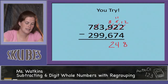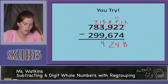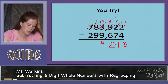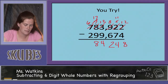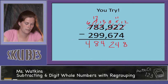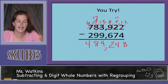We need to regroup again: this 8 becomes a 7 and this 3 becomes a 13. 13 minus 9 equals 4. Let's regroup again: this 7 becomes a 6 and this 7 becomes a 17. 17 minus 9 equals 8, and 6 minus 2 equals 4. So our answer is 484,248.